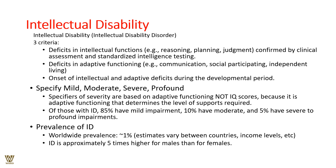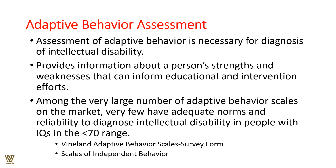Intellectual disability involves three criteria: deficits in intellectual functions; deficits in adaptive functioning across communication, social participation, and independent living; and onset during the developmental period. Worldwide prevalence is under 1%, though estimates vary by country and income level, and ID is approximately five times higher in males than females. Adaptive behavior assessment is necessary for diagnosis; few instruments on the market have adequate norms and reliability for diagnosing ID in people with IQs below 70.